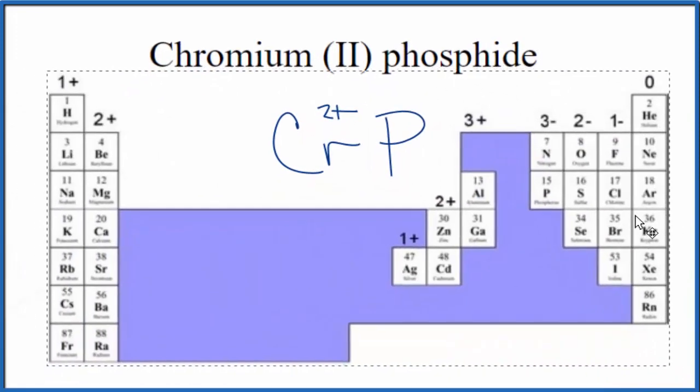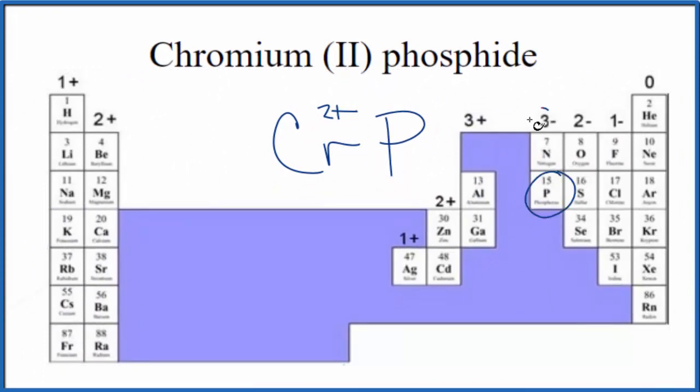For phosphorus, we could look that up on the periodic table here. Phosphorus right here below nitrogen, 3-. So we have the charges for each element in chromium(II) phosphide.